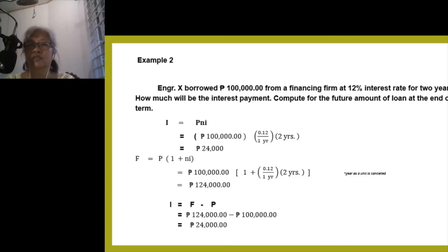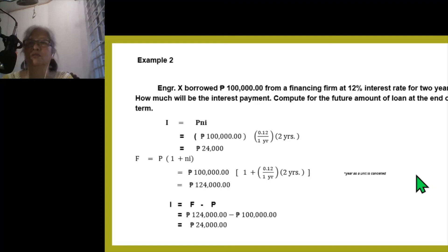Another example: Engineer X borrowed $10,100,000 from a financing firm at 12% interest rate for two years. How much will be the interest payment, and compute for the future amount of the loan at the end of the term. Applying the formula, we get an interest of $24,000. Solving for the future amount F, you get $124,000. As a check: the future amount minus the principal gives $24,000.